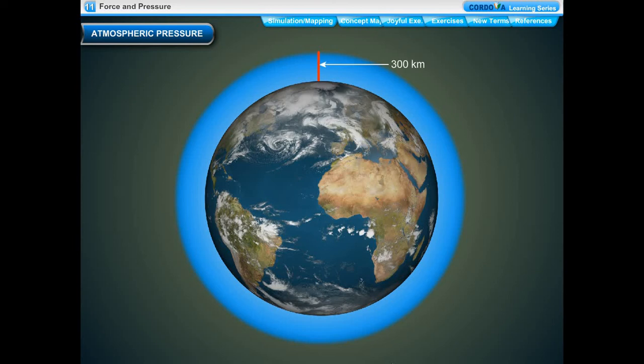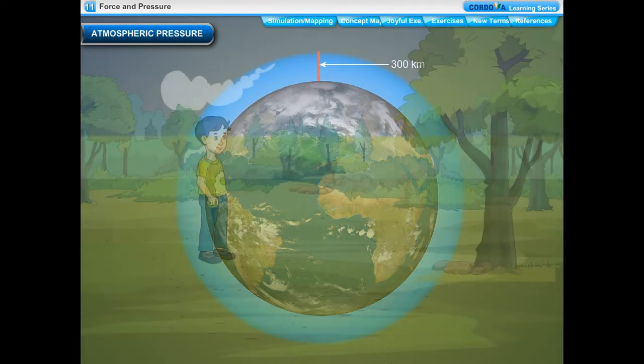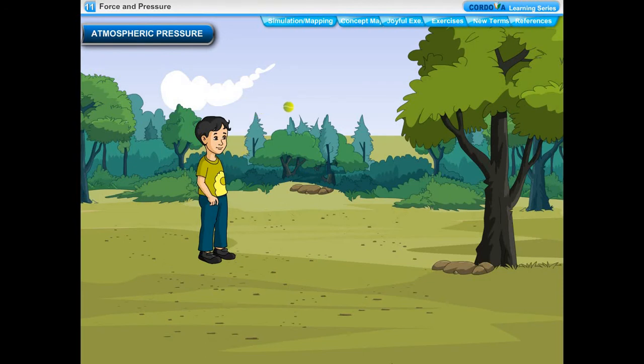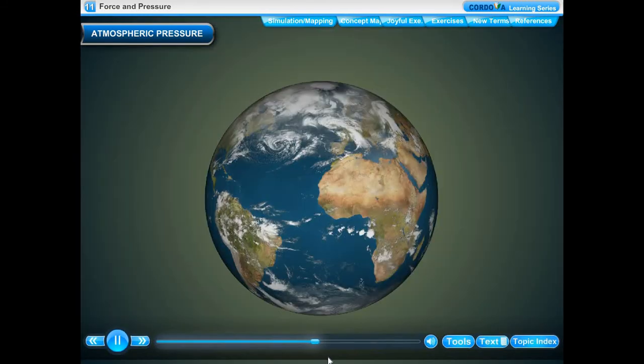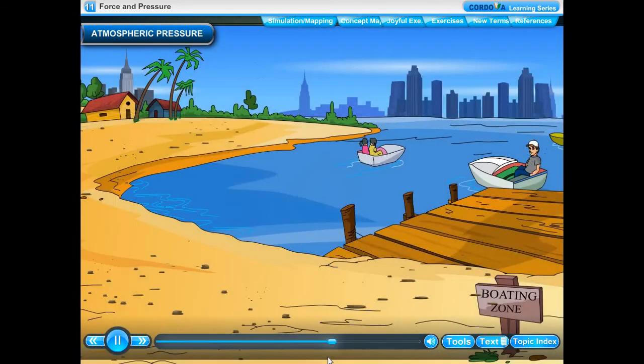Air has weight, so it creates pressure on the objects below. The pressure exerted by the air due to weight is known as atmospheric pressure. The atmospheric pressure on the earth's surface at sea level is about 100 kilopascals, or 100 kPa.